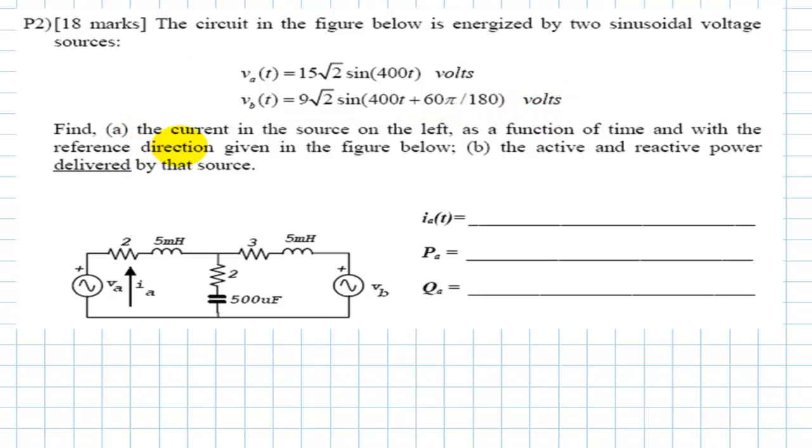Find: (a) the current in the source on the left as a function of time with the reference direction given in the figure, and (b) the active and reactive power, P and Q, delivered by that source.